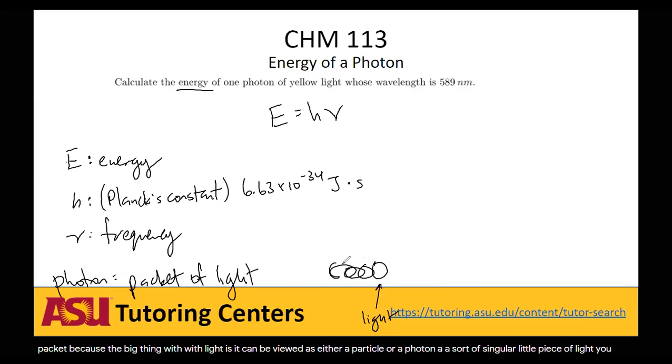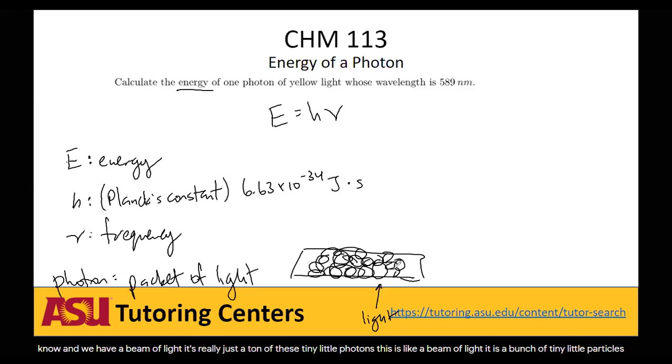And when we have a beam of light, it's really just a ton of these tiny little photons. This is like a beam of light. It's just a bunch of tiny little particles, tiny little photons together. So that's one way you can view light.